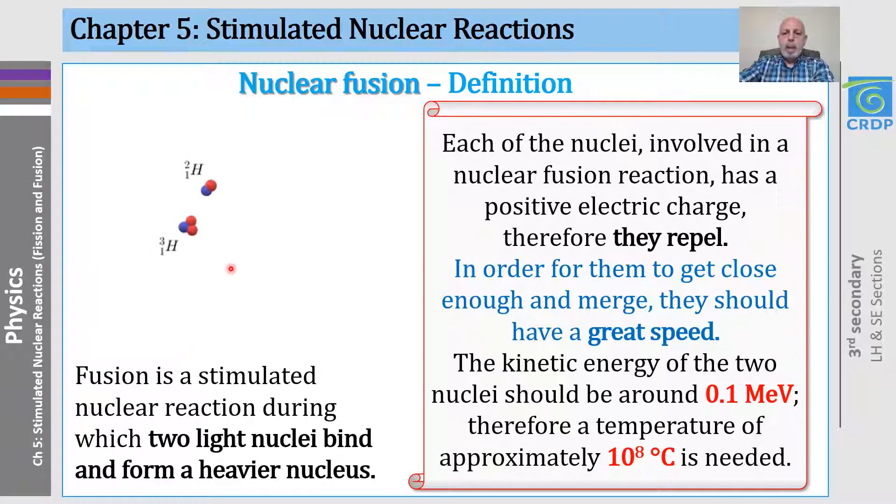Each of the nuclei involved in the nuclear fusion reaction has a positive electric charge, and therefore they repel. So in order for them to get close enough and merge, they should have a great speed, and this means they should be in a place where the temperature is approximately equal to 100 million degrees.